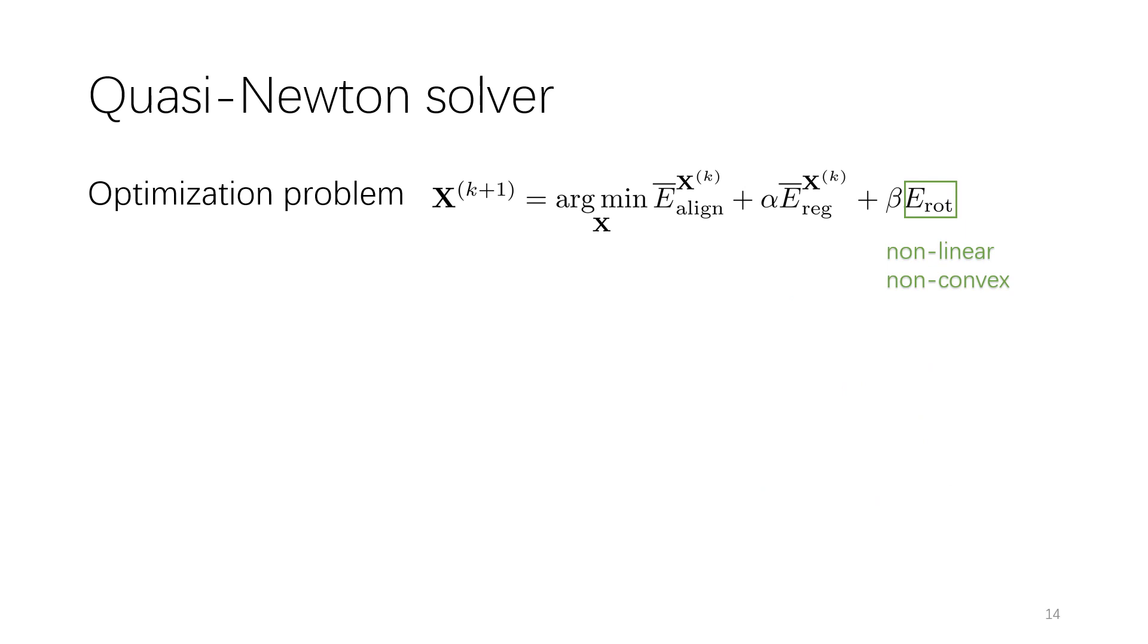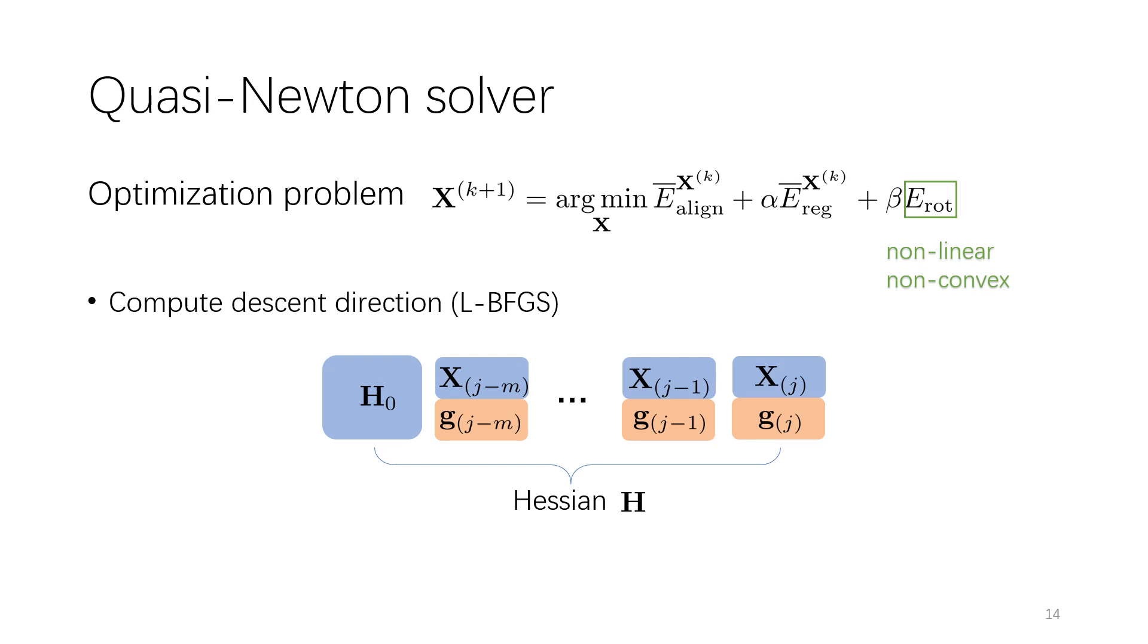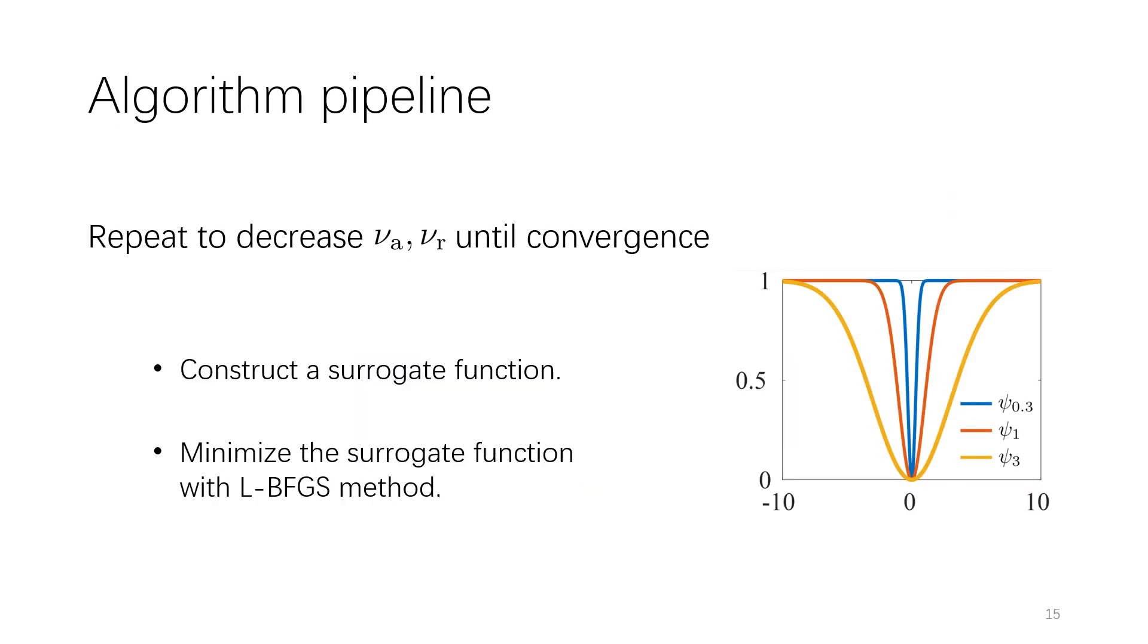For the subproblem, we notice that the rotation term is still non-linear and non-convex, so we use quasi-Newton solver to solve it efficiently. We use the latest M plus 1 iterates and the gradients with LBFGS method to obtain descent direction. It can reduce the number of iterations to speed up the convergence.